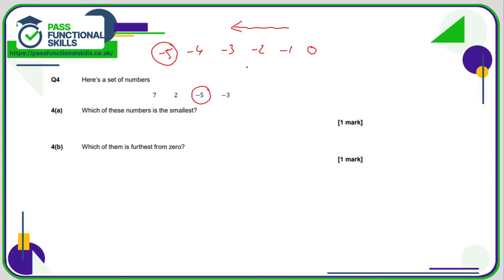Which of them is furthest from zero? So again, if you like, let's just do a number line so we can include all of the numbers: one, two, three, four, five, six, seven. So which is the furthest from zero? Well, between minus five and zero, that is a jump of five, whereas from zero to seven, that is a jump of seven. So seven is furthest from zero.